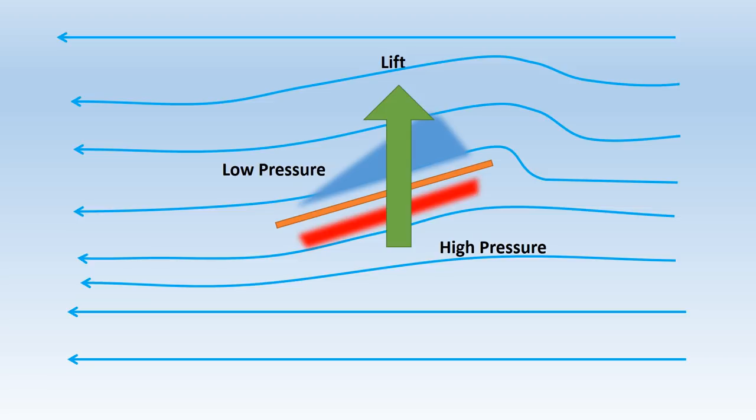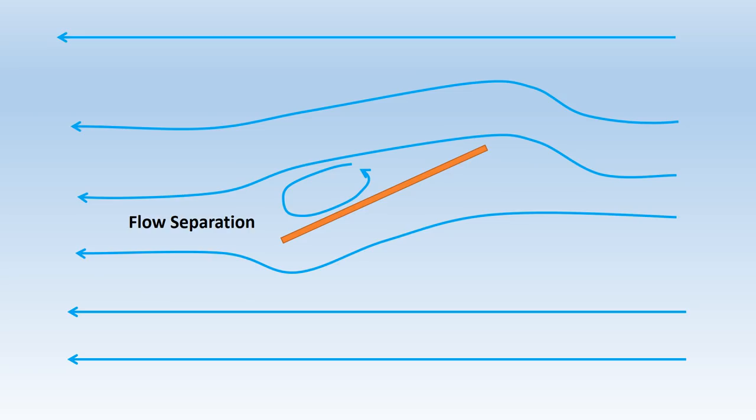Increasing the angle of attack forces the streamlines to curve more, increasing the pressure difference and thus increasing the lift. In the real world, with friction, the streamlines are not able to turn tightly enough to flow around all shapes. This results in flow separation. When the flow separates, the area of low pressure above the wing is significantly reduced and therefore the lift is also significantly reduced. This is known as the stall.